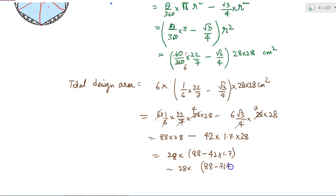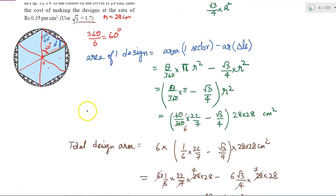So this is 71.4, so this is equal to 28 into, 88 minus 71.4 will come out as 16.6, which comes out as 464.8 cm². This is the total area of the design.